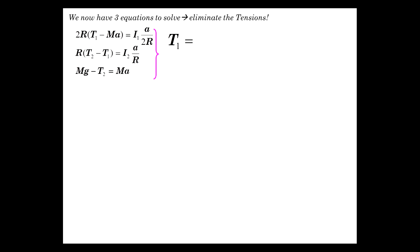First, T1, getting T1 by itself here. I'm going to divide through by 2R on both sides, get that by itself. So we have I1 A over 4R squared, and then plus M A, because that's sitting there by itself. There's T1.